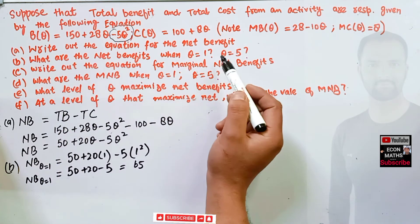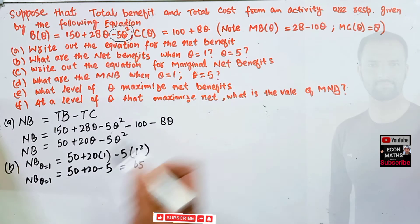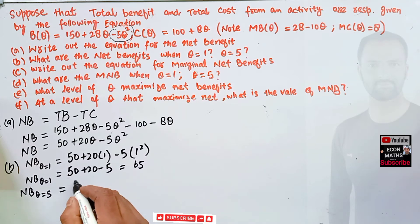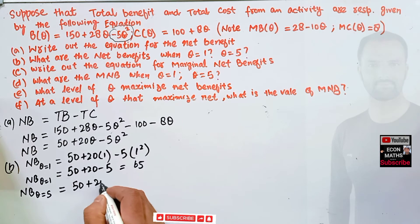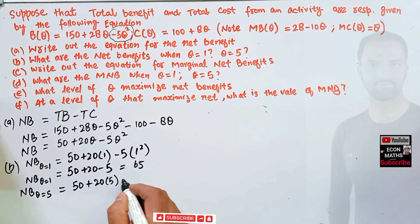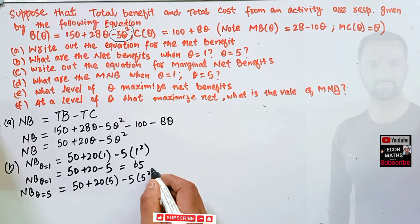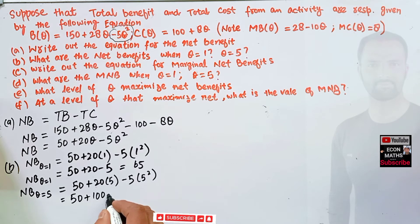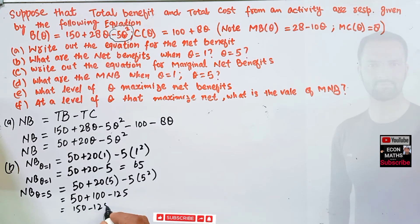Next, net benefit when Q = 5: we plug Q = 5 into the equation. We have 50 + 20(5) - 5(5²) = 50 + 100 - 5(25) = 50 + 100 - 125 = 25. So net benefit when Q = 5 is 25.